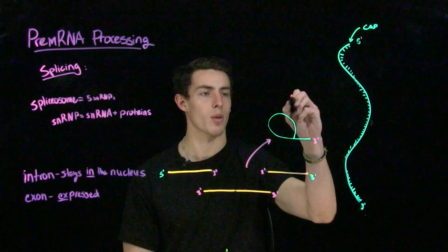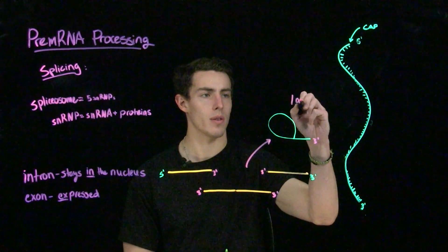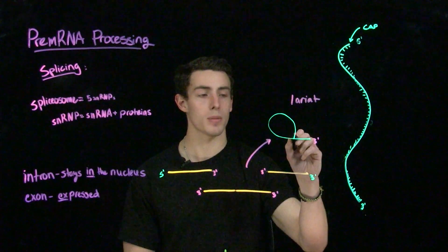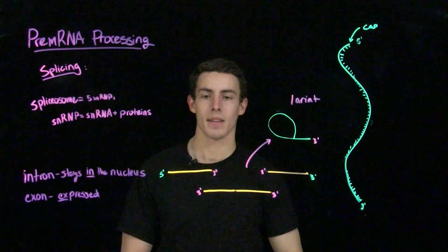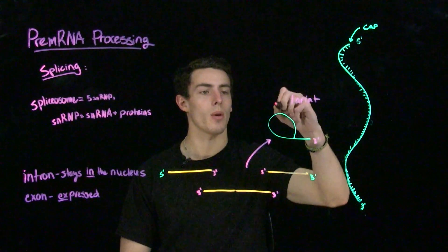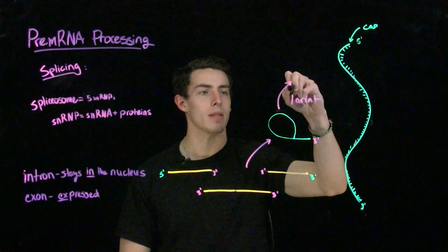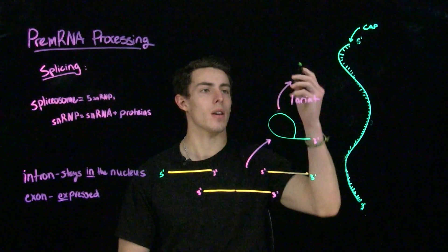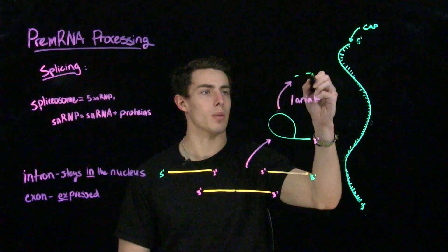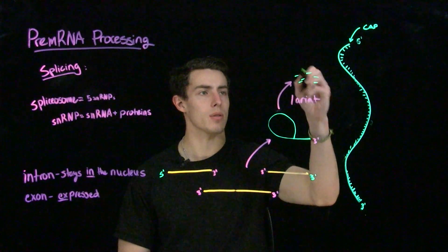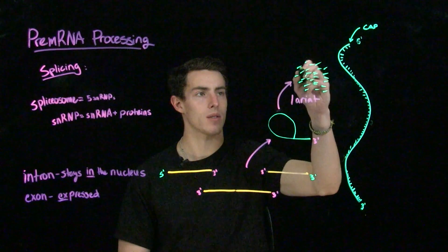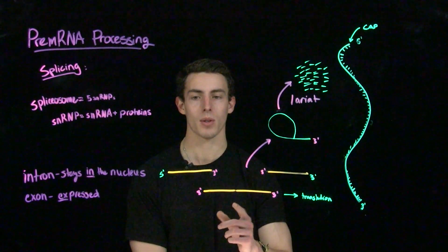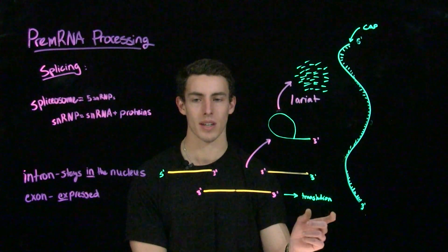In addition, we're going to form a structure called the lariat with this loop section of intron that we removed. This lariat will go on to be broken down into its individual nucleotides, which will then be recycled and used in further rounds of transcription. At this point, we now have a mature mRNA molecule that can go and be translated.